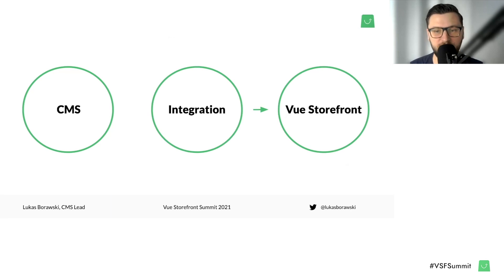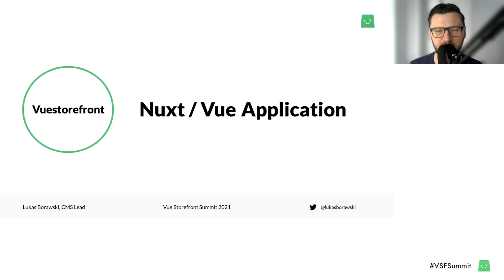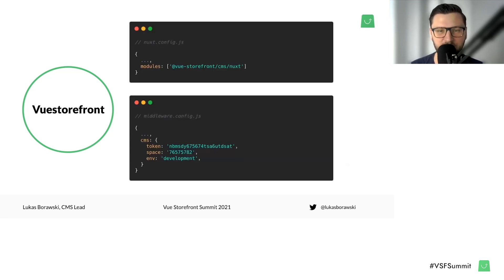Now we are moving to Vue Storefront as the application — the final piece of this integration where we connect the CMS, the integration, and the application built on top of Vue Storefront. This application is a Nuxt Vue application. To register our integration with our application — because it's a Nuxt module — we need to register a regular Nuxt module, adding it to the Nuxt config. We also provide some config for our middleware, because our CMS integration lives on top of our middleware. You need to provide special config for the CMS, which in most cases will be something like a token, a space, or an environment.